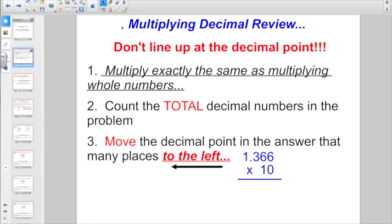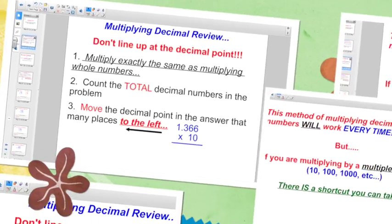So just a quick little review. What we know so far about multiplying decimal numbers, we don't line up at the decimal point. We multiply exactly the same as multiplying whole numbers, count the total decimal numbers in the problem, and we move the decimal point in the answer that many places to the left. So let's take a look at what else we should know.